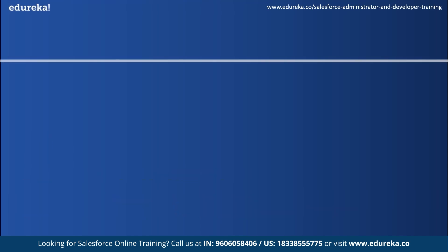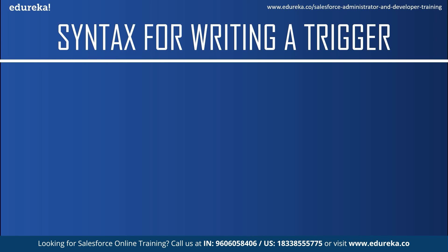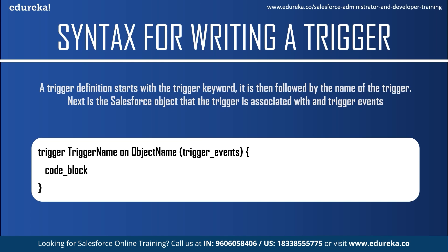Now let me explain the syntax for a Salesforce trigger. The syntax of a trigger definition is quite different from a class definition syntax. A trigger definition starts with the trigger keyword, followed by the name of the trigger. You can name a trigger anything you want. Next is the Salesforce object — known as S object — that the trigger is associated with, such as leads, contacts, accounts, or any custom objects. Then comes the trigger event, and finally the body of the code which will contain the condition under which it fires.